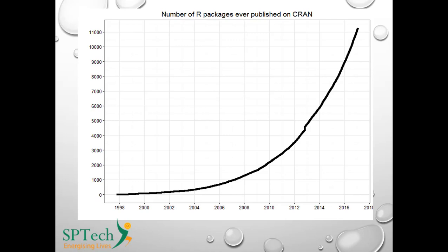Today R has multiple library functionalities across many specific domains that can be imported and used in programming logic. R can also be used to develop advanced software systems. This curve illustrates the peak growth in libraries incorporated over the period since R came into existence.